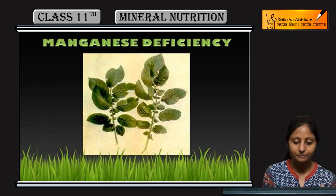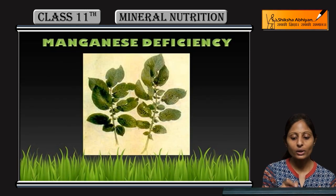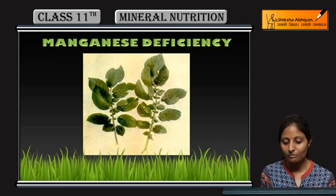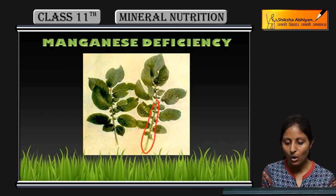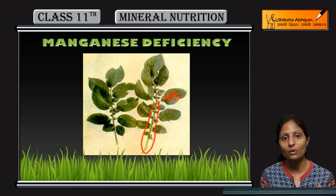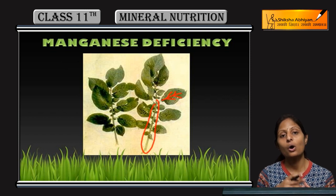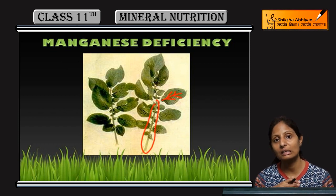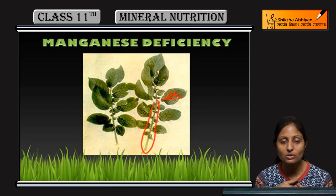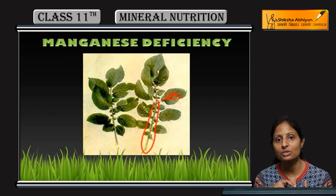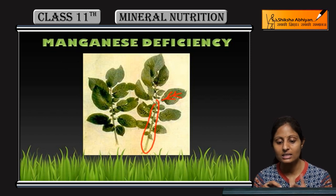Young leaves ki death ho jati hai plant ke parts mein. This structure is showing the yellowish of the veins — stem or leaves ke andar jo veins hoti hain unka color yellow ho jata hai. That is the symptom of chlorosis. Aur bahut hi early stage par jo leaves hoti hain unki death hona shuru ho jati hai — premature shedding hona shuru ho jati hai. That all are the deficiency symptoms and functions of manganese.